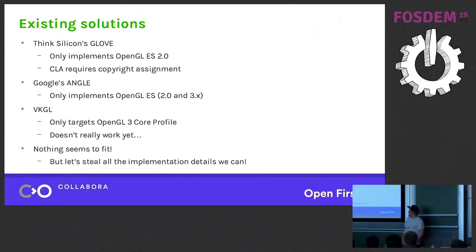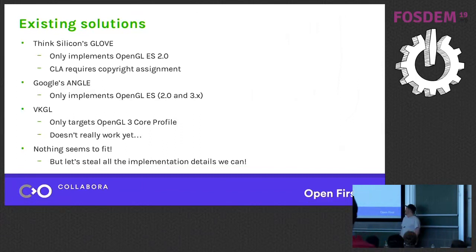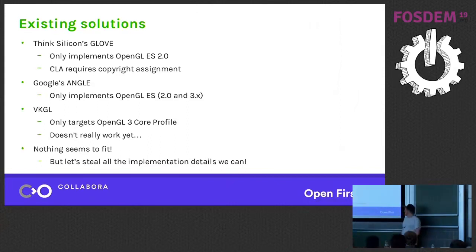Google has Angle — they also implement only OpenGL ES. And then there's something called VKGL, which targets OpenGL 3.0 core profile, so it's not going to do legacy OpenGL versions, no fixed function or anything like that. It's a pretty slow-moving project, a spare-time project for a single developer, and it has a really long way to go before it can be very useful.